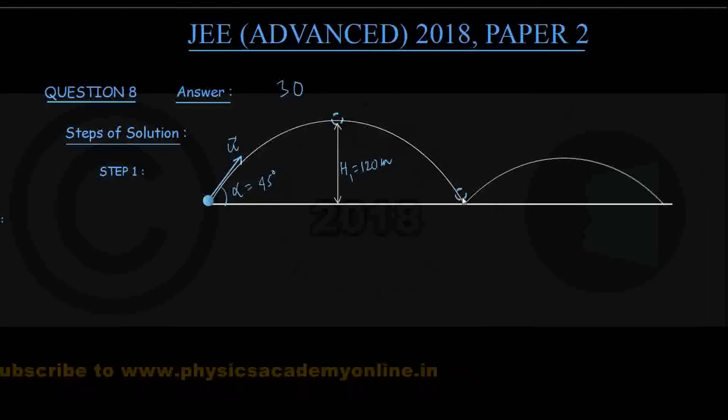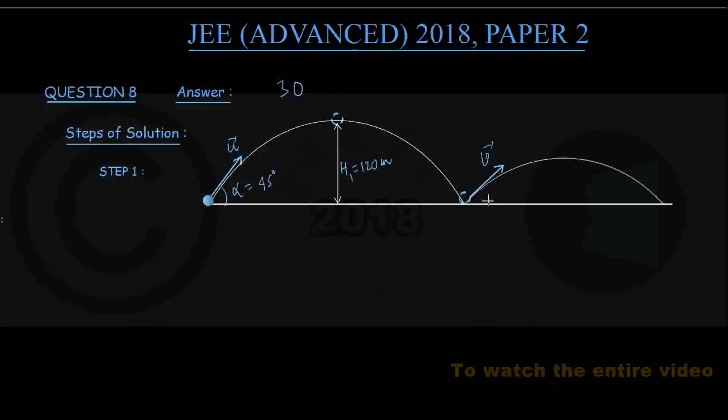Then the ball bounces from the ground and again rises with a new velocity of projection that I am calling v. And this vector v makes an angle with the ground that we take to be beta, and this angle beta is also known. This is 30 degrees.